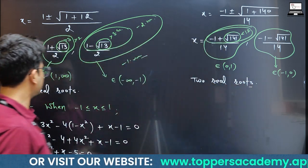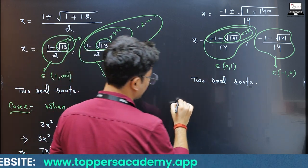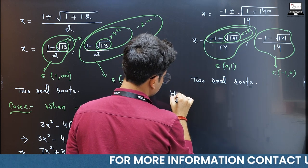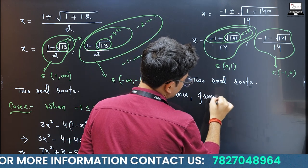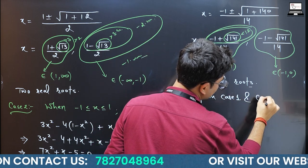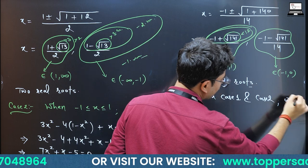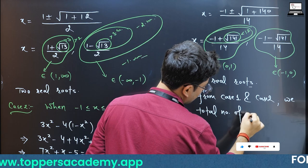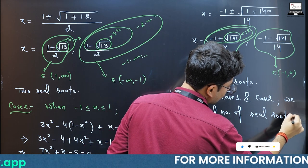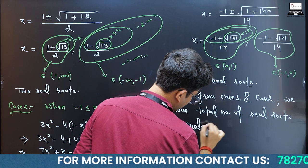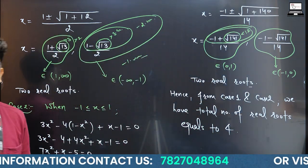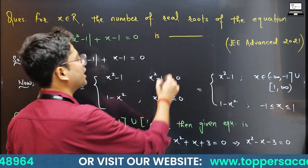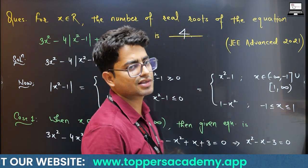So combining Case 1 and Case 2, we have two real roots from each case. Hence, the total number of real roots of the given equation equals 4. This is the final answer.